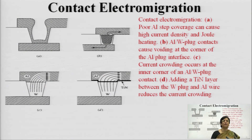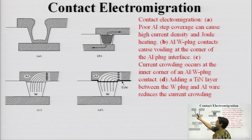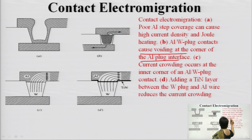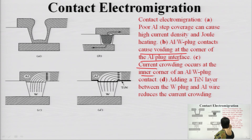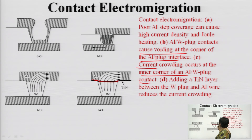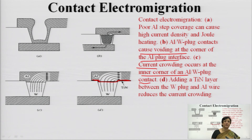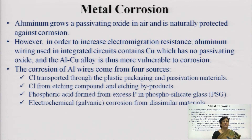This is shown: poor step coverage can cause current crowding and electromigration. Plug contacts can also cause voiding and current crowding at the inner corner of the Al plug contact. By layering titanium nitride over the plug, and because TiN has higher resistivity, the crowding effect is changed, reducing electromigration. Metal corrosion was another issue — as aluminum grows a passivation oxide in air, it is naturally protected. However, copper added to increase electromigration resistance has no passivating oxide, making it vulnerable to corrosion.